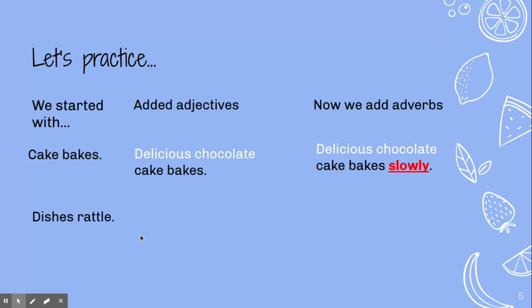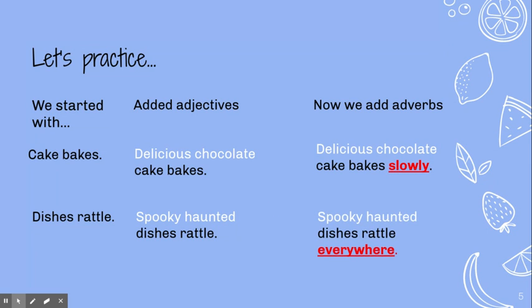Alright, last one. Yesterday we said 'dishes rattle,' and we wondered why they were rattling. When we added adjectives we found out — oh, because they're spooky haunted dishes that rattle. I'm still trying to paint a picture for my reader: where, when, how do these spooky dishes rattle? 'Spooky haunted dishes rattle everywhere.' Now I've added that adverb and I've got a mental picture. I can imagine standing in a creepy haunted old kitchen — it's not just coming from one part, it's all around me. Isn't that a much better sentence? Isn't that amazing what adjectives and adverbs can do for your writing?